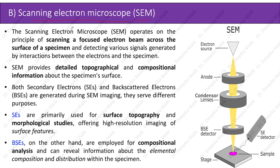SEM operates on the principle of scanning a focused electron beam across the surface of a specimen and detecting various signals generated by interactions between the electrons and the specimen. SEM provides detailed topographical and compositional information about the specimen's surface.